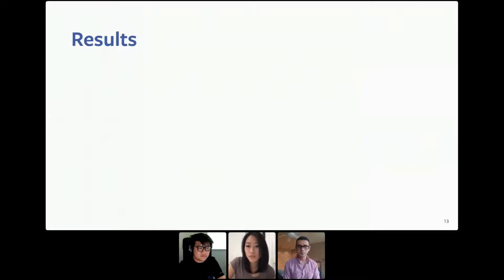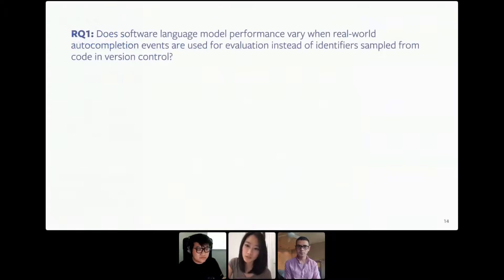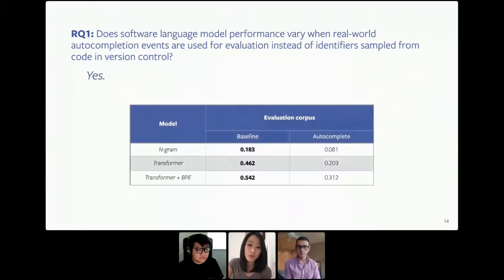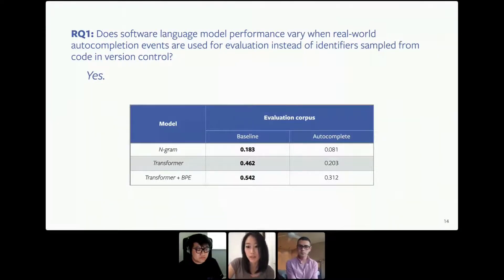Now let's discuss some of the results following the research questions listed in our paper. The first research question was: does software language model performance vary when real-world autocomplete events are used for evaluation instead of identifier samples from code in version control? The answer is yes. From this table, we can see that for all three models, there is a significant decrease in accuracy when evaluating on real event data. This tells us that there is indeed a concept drift between the datasets, and the previous methods of evaluating on committed code may not be the best idea since it does not correspond well to real developer success.